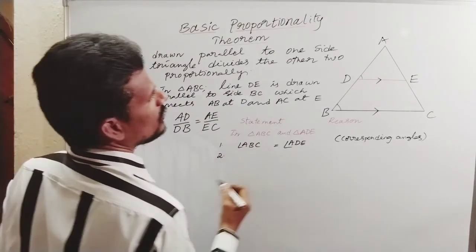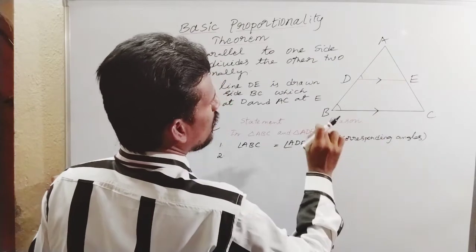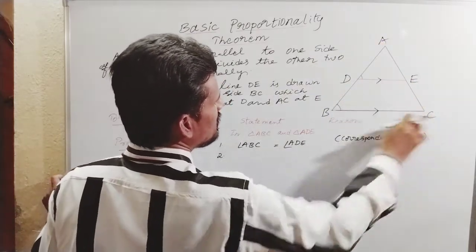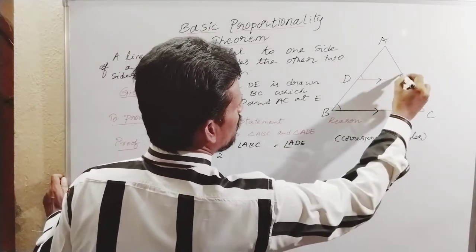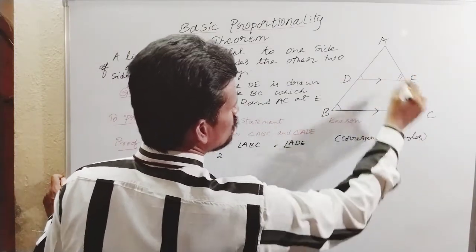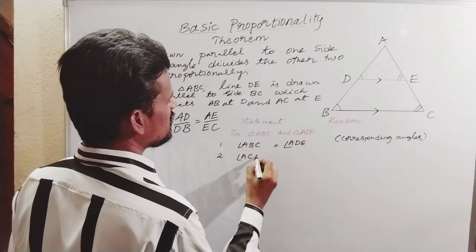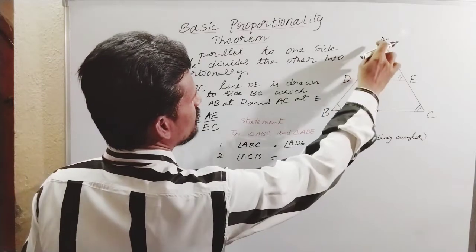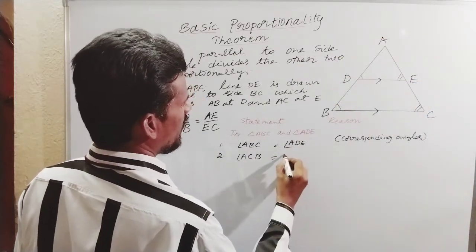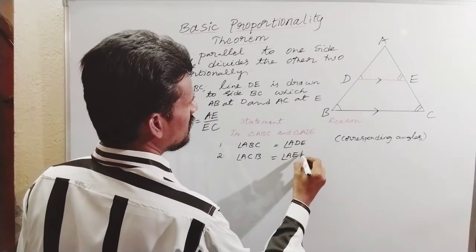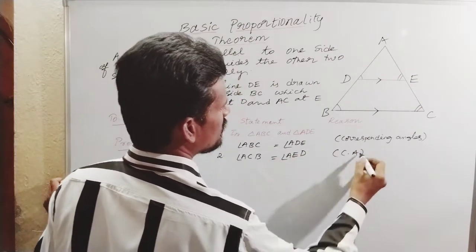Second, observe here: angle ACB and angle AED — these two are also corresponding angles. So these two are also equal. Statement: angle ACB is equal to angle AED. Reason: corresponding angles are equal.